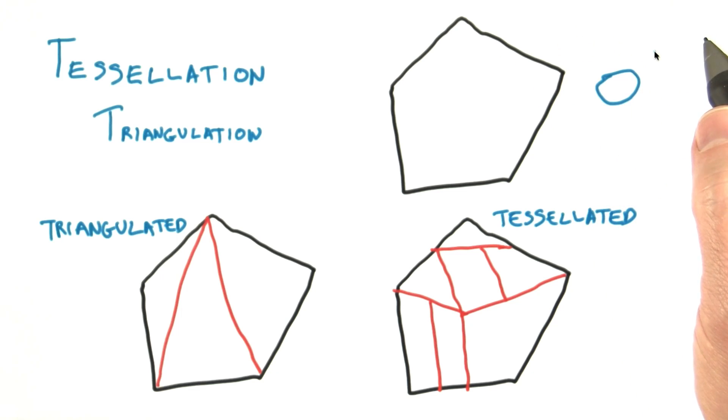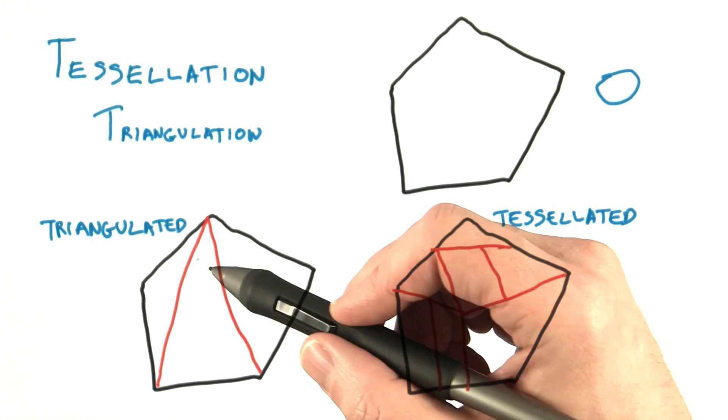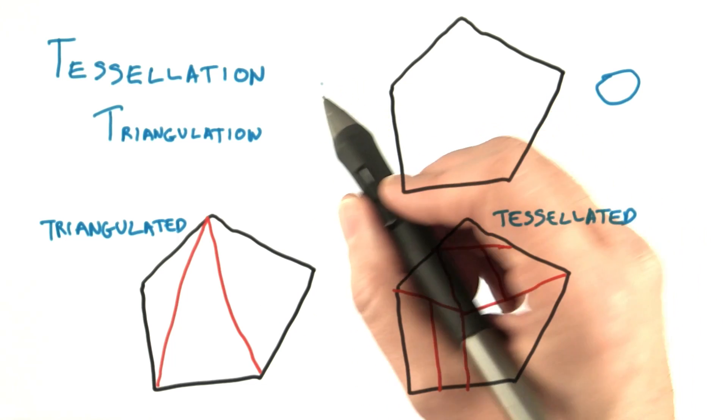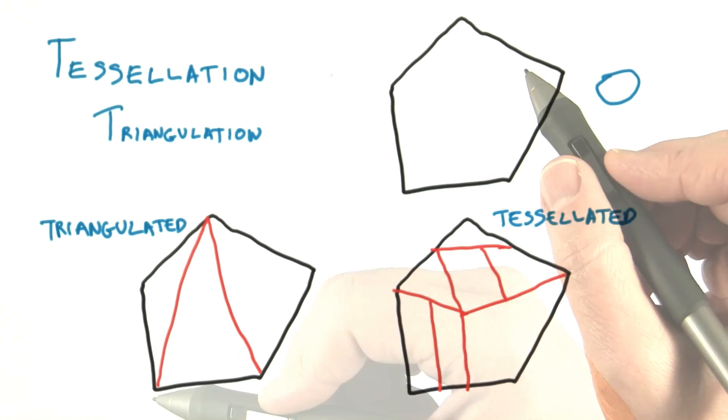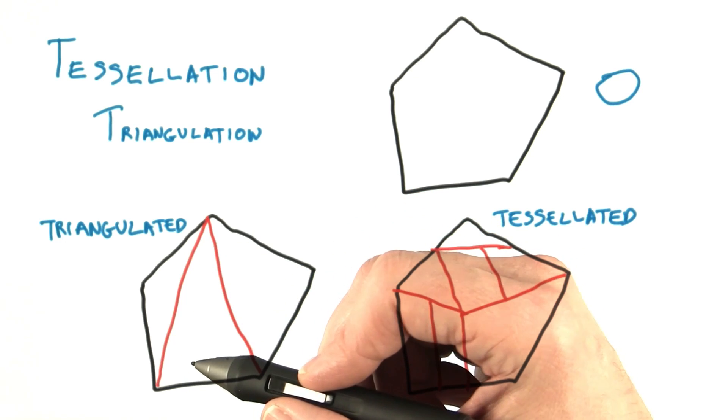Graphics hardware manufacturers quickly came to realize that the triangle is a fine building block for almost everything we want to draw. For example, one problem with a quadrilateral is that the surface is poorly defined if all four points are not in the same plane. A triangle's three points are, by definition, always in the same plane and so have no such problems.